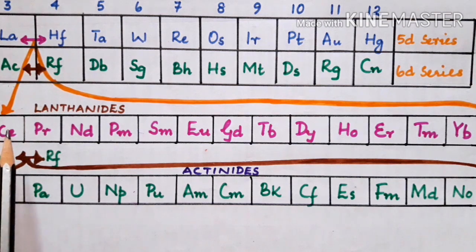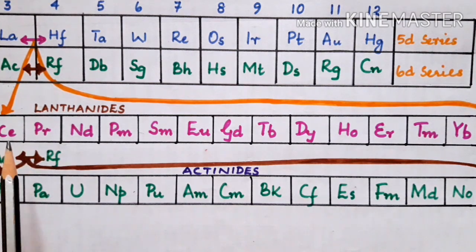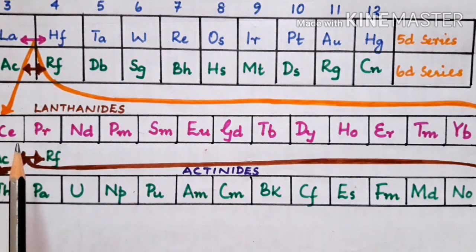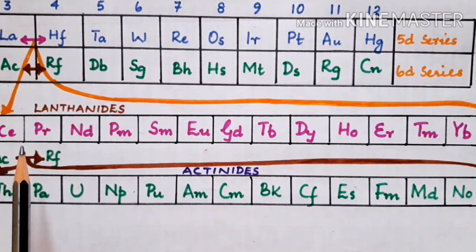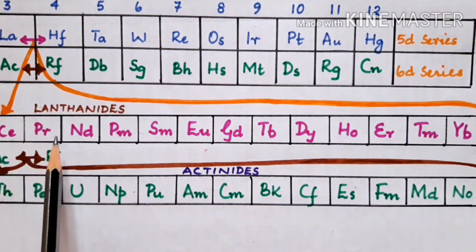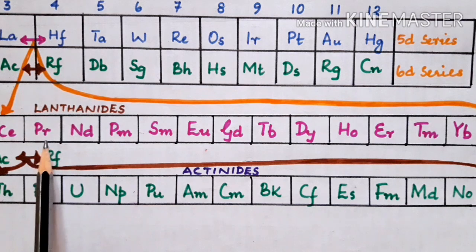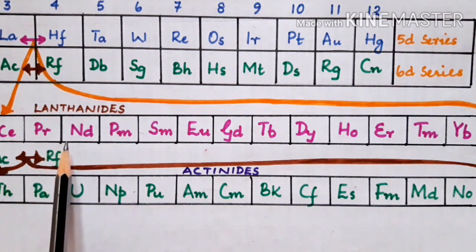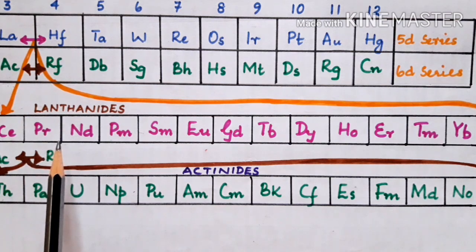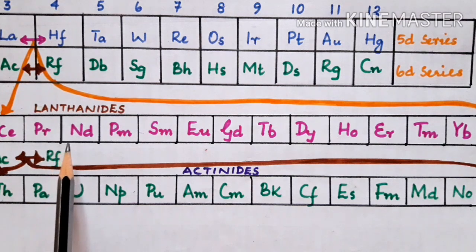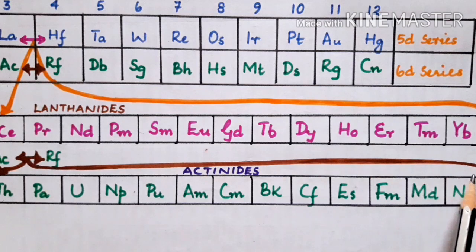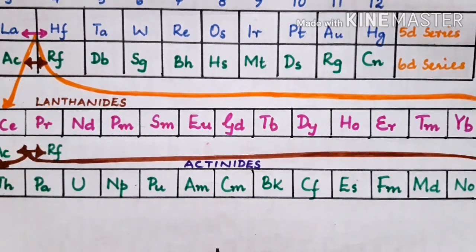When we move from left to right, for each increase in atomic number there is a subsequent increase in the number of protons, but the electrons are entering the inner penultimate f orbitals. The f orbitals have a complicated structure with very poor shielding effect. As we move from left to right, with unit increase in atomic number, the nuclear charge is increasing but electrons are entering the f orbitals, which have poor shielding effect. As a result, the growing nucleus has more attraction towards the valence electrons, so the size keeps on decreasing — that is lanthanide contraction.